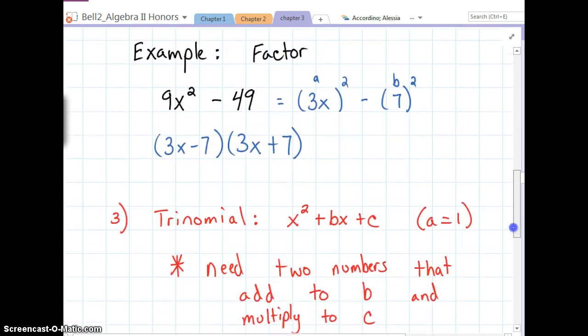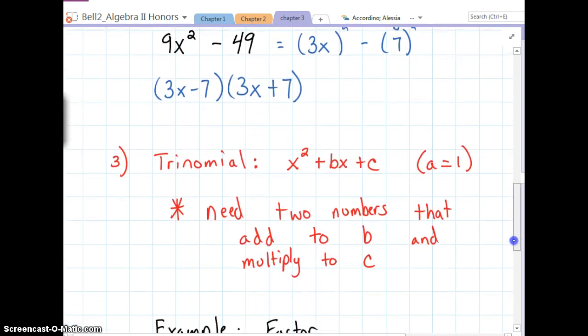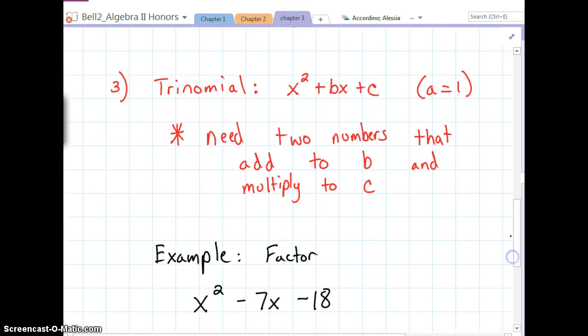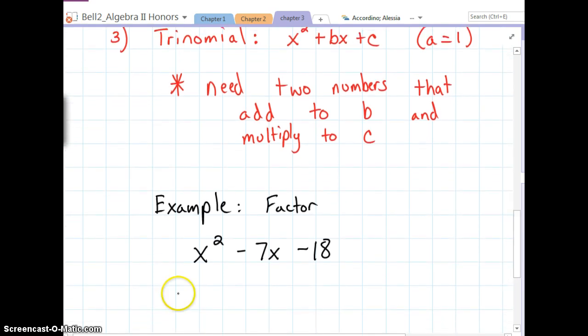When we start getting into factoring trinomials, it gets slightly more difficult. If we wanted to factor a trinomial like x squared plus bx plus c, meaning my a value is 1, we need two numbers that add to b and multiply to c. And those two numbers are going to help us factor it. When we factor a trinomial, it's going to factor into two binomials.